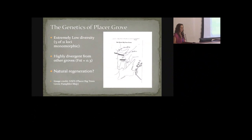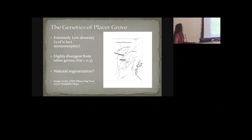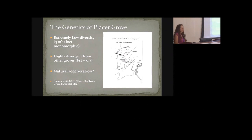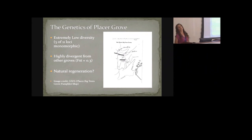Placer Grove is an outlier grove about 60 miles from the closest grove, which is North Calaveras. It has only six adult individuals, so it is tiny. It also has extremely low diversity — we have 11 markers describing the genetic diversity, which are fairly variable in the rest of the range, but five of the 11 showed no variation at all in these trees. There are also really low levels of heterozygosity.